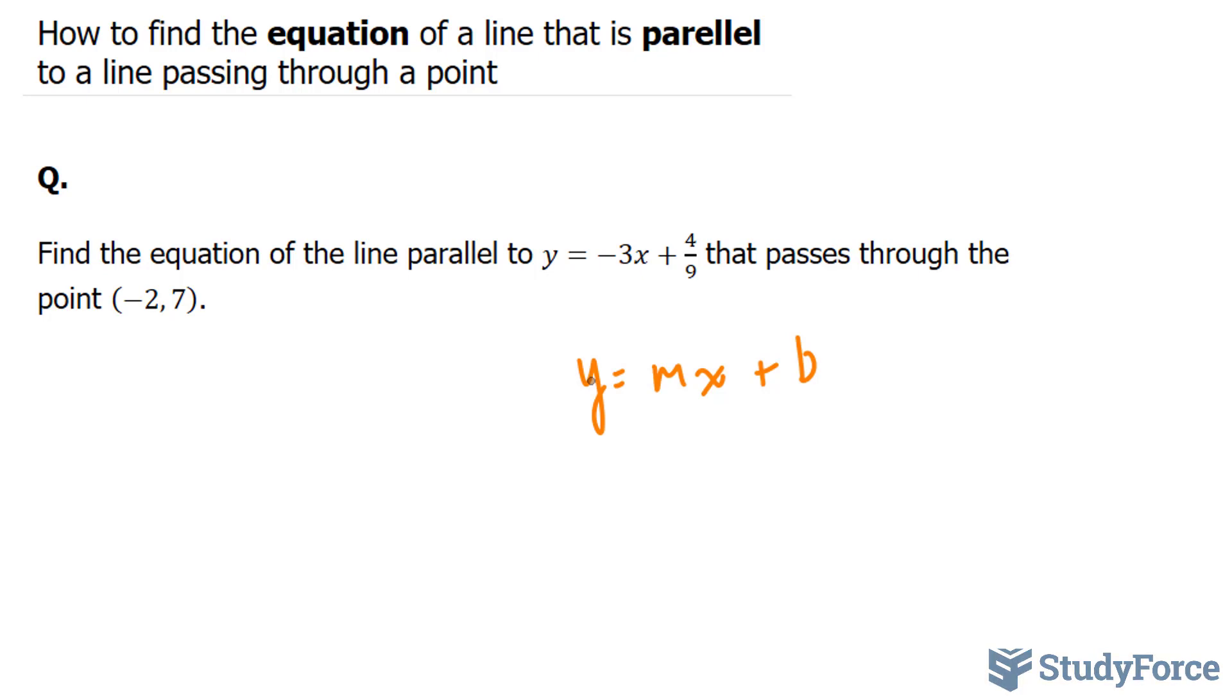The question asks us to find an equation of a line that is parallel. Lines are parallel when their slopes are the same. Because of that, our new equation has to have a slope of negative 3, so our m value will equal negative 3.